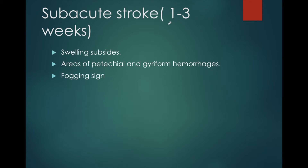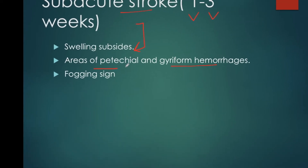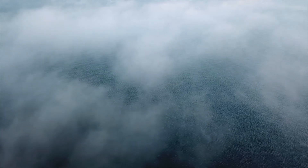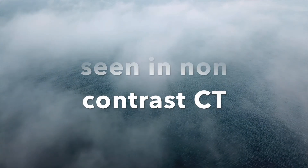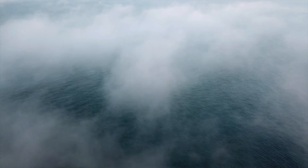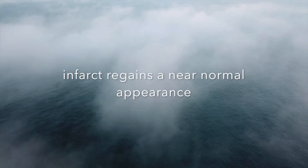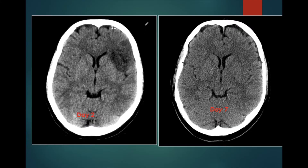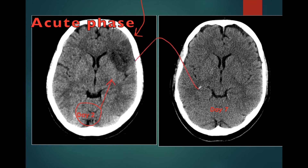If the patient presents after one week and before three weeks, then it is known as subacute stroke. In subacute stroke, the swelling of the brain subsides and there may be areas of petechial and gyreform hemorrhages. One specific sign which may occur in subacute stroke is known as the fogging sign. The fogging phenomenon is seen on non-contrast CT of the brain and represents a transient phase of infarct evolution where the region of cortical infarction regains a near-normal appearance. In our previous acute stroke case in the left frontal lobe, the finding was seen on day 2, but later on day 7 the area of hypodensity in the left frontal lobe had disappeared. This disappearance of hypodensity is known as the CT fogging sign.